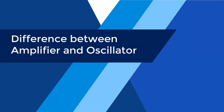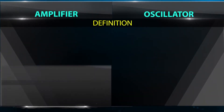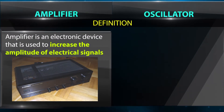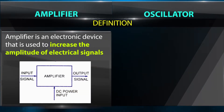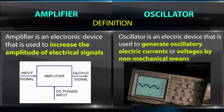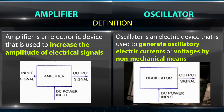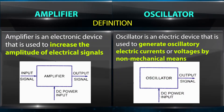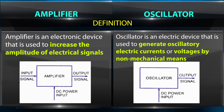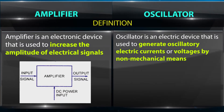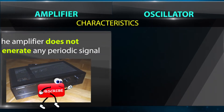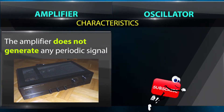Difference between amplifier and oscillator. An amplifier is an electronic device that is used to increase the amplitude of electrical signals, whereas an oscillator is an electric device that is used to generate oscillatory electric currents or voltages by non-mechanical means.